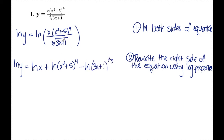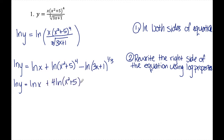Since we have a cube root, I rewrite it as a fractional exponent. Then I use log properties one more time to bring the exponents to the front: so I have ln(y) equals ln(x) plus 4·ln(x squared plus 5) minus one-third·ln(3x plus 1).